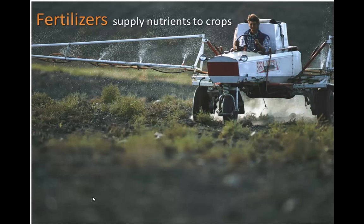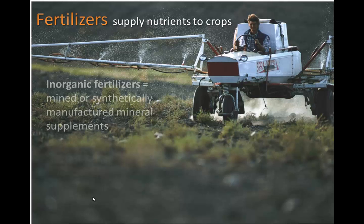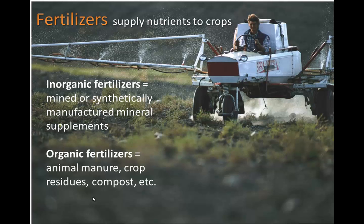Next topic: fertilizers. We know they supply nutrients to crops. There are two classes: inorganic fertilizers, which are mined like phosphorus or synthetically manufactured mineral supplements, and organic fertilizers coming from animal manure, crop residues, compost, etc. Along with inorganic fertilizer is the nitrification done in chemical factories with the Haber-Bosch process, from which we make ammonium nitrate and build it into fertilizer pellets or fertilizer solution applied to a field.